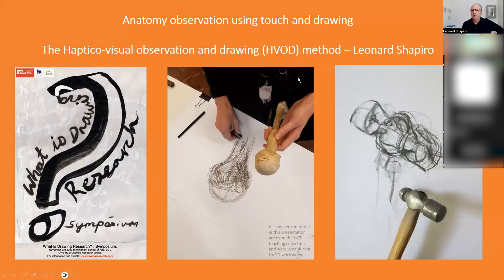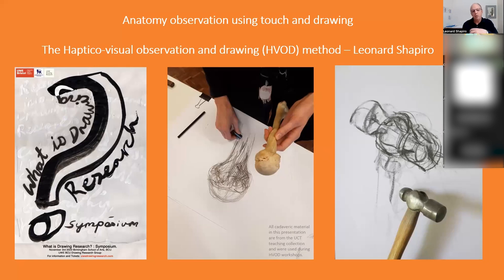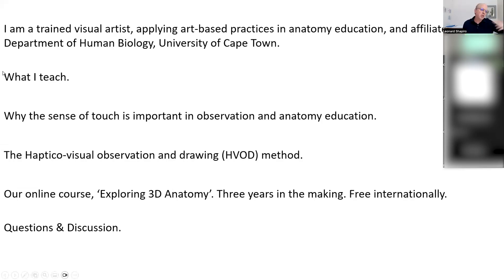The method is called the Haptico Visual Observation and Drawing method. These are the types of drawings we typically see — a combination of cross contour and gesture drawings. We're not trying to make anything artistic; we're using mark-making and drawing as a way of representing what we are feeling with one hand. I'll go into that more, but first let me outline why the sense of touch is important in observation.